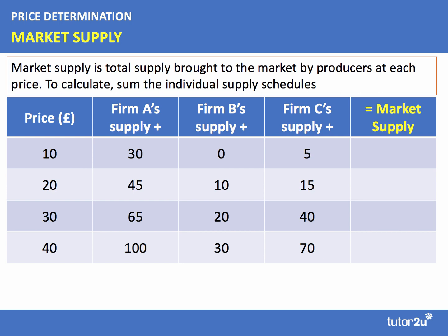Let's take an example. At a price of £10, Firm A will supply 30. Firm B is not willing and able to supply anything at that price — perhaps they have higher costs. Firm C is willing and able to supply 5. So at a price of £10, the market supply is 35.